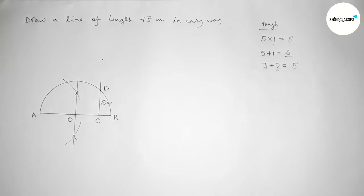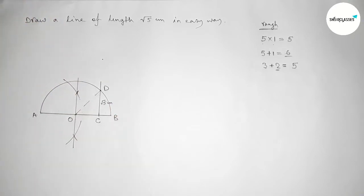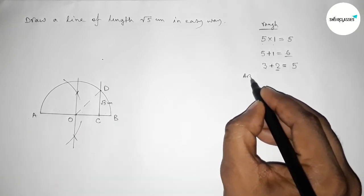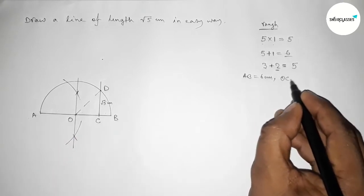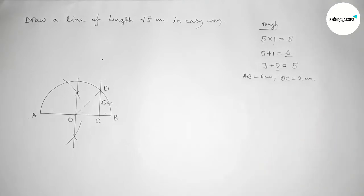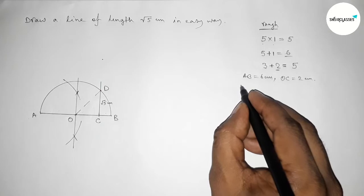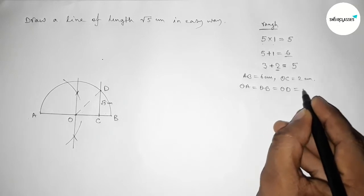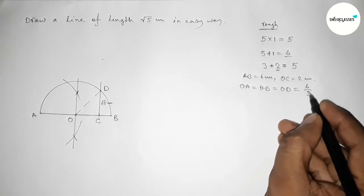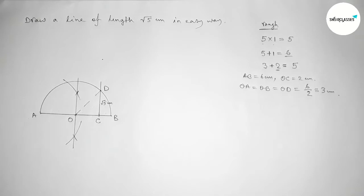Now I am going to prove that the length CD equals root 5 centimeter. First, joining O and D. The given line AB equals 6 centimeter, OC equals 2 centimeter. The lengths OA, OB, and OD are all radii of the semicircle, so they are equal and each equals 6 divided by 2, which is 3 centimeter.